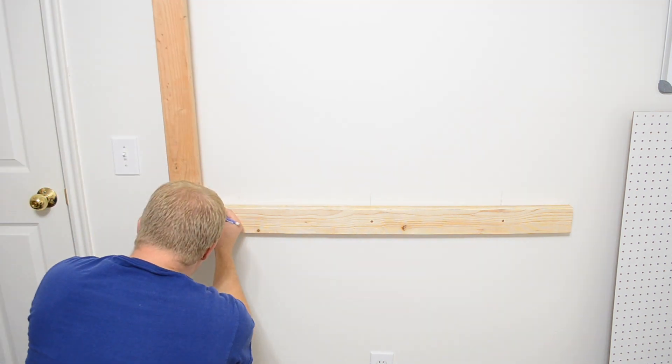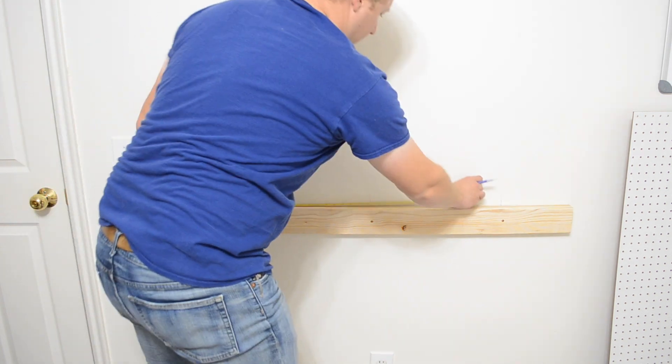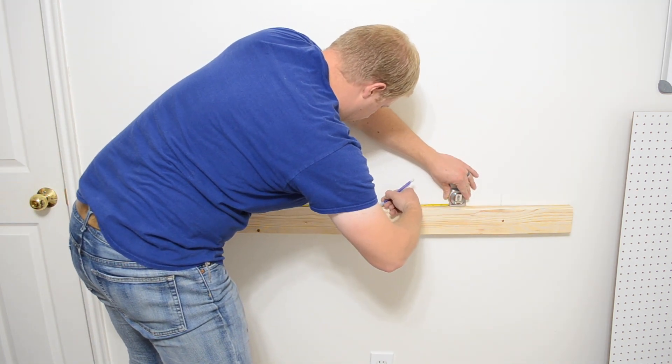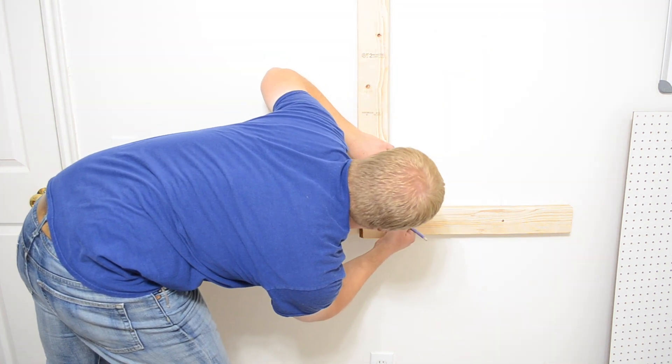Next, we'll measure and mark the vertical beams. Because I'm using two 2 foot by 4 foot pegboards, I'm putting a third beam in the middle to support the seam, so I marked and measured the middle as well.